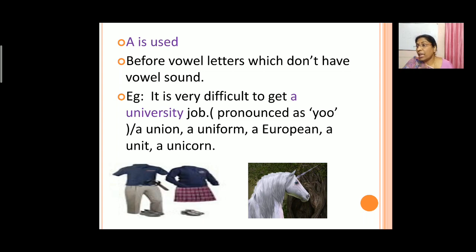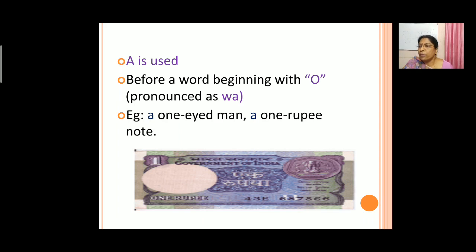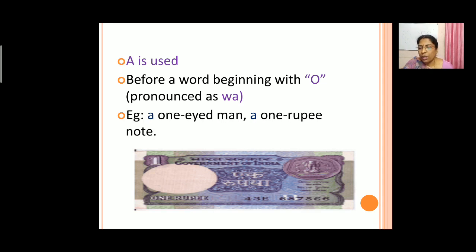'A' is also used before a word beginning with 'o' where that 'o' is pronounced as a 'w' sound. So there also we use 'a'. For example: a one-eight, a one-rupee note. Here 'o' in 'one', even though it is a vowel, is pronounced with a 'w' sound. So there also we use 'a'. So 'a' is used before the 'yu' sound and also the 'w' sound.